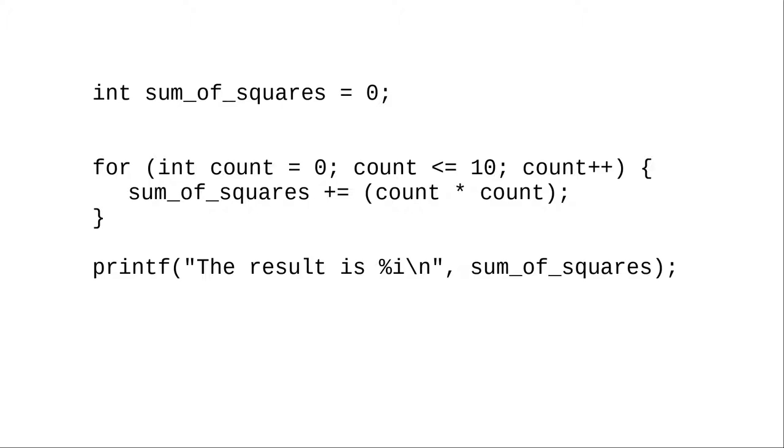A for loop specifies three things. The initialization of the loop control variable. The loop condition. As long as this condition is true, we keep going through the loop. And the action to take after each iteration. In this case, we use the post increment plus plus operator to add one to the counter each time we go through the loop.